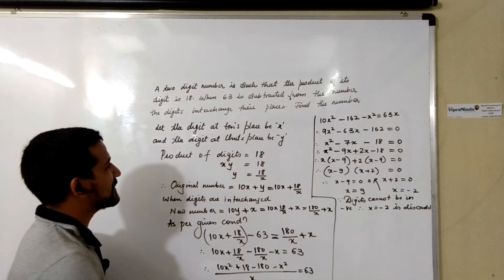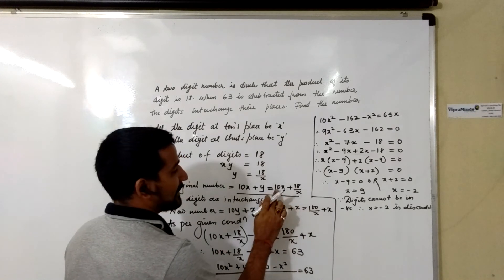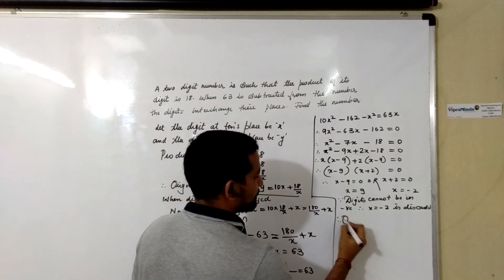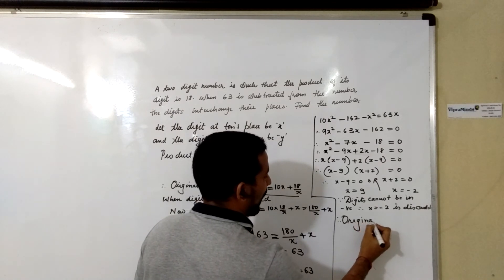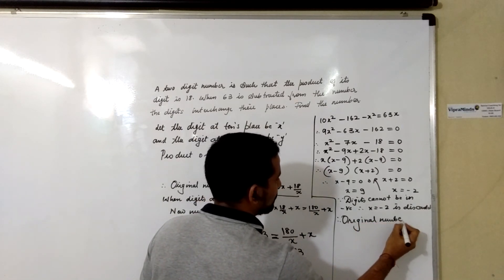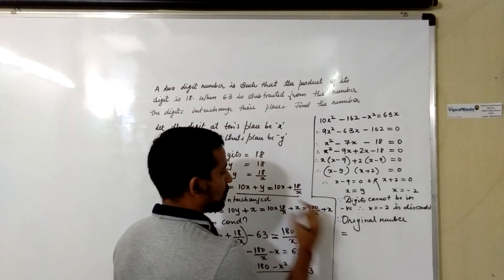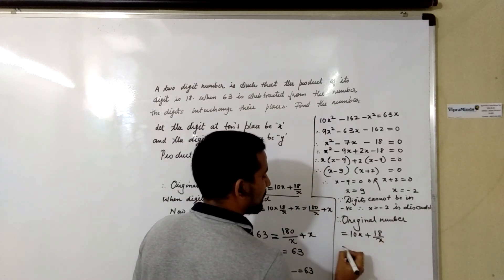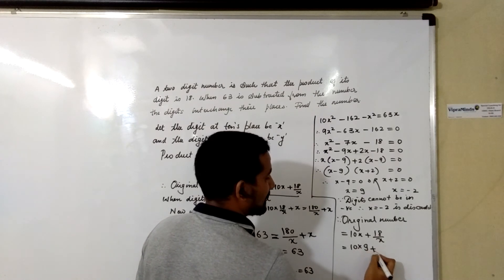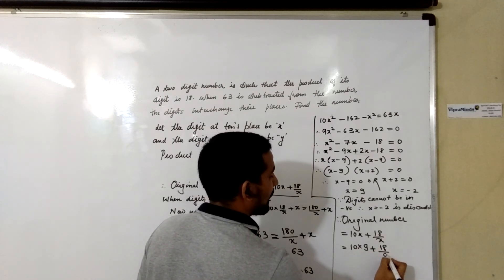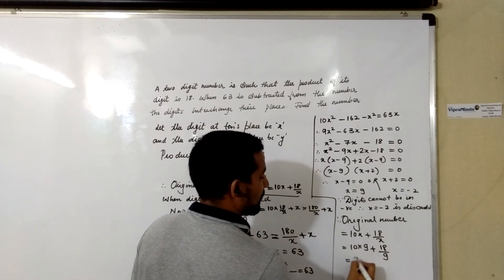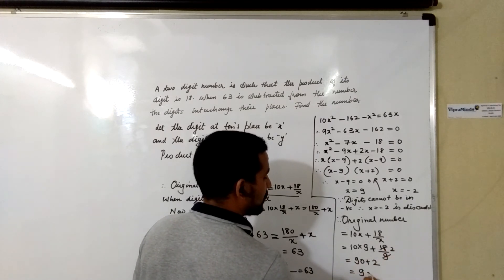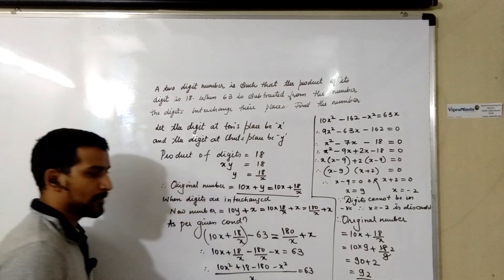Now, what is the original number? The original number is 10X + 18/X. Substituting X = 9, it becomes 10 × 9 + 18/9 = 90 + 2 = 92. So 92 is the required number.